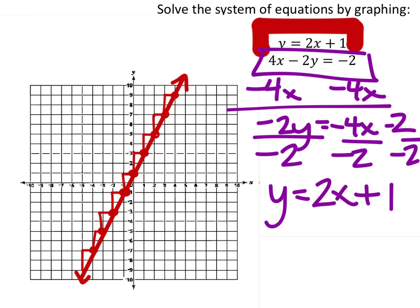So that gives us a y-intercept of 1 right here, and I'll use the slope 2 over 1 to draw the rest of the line.